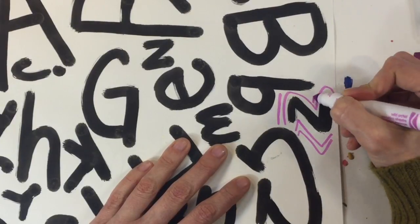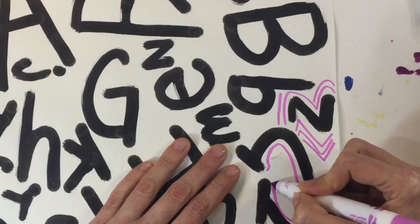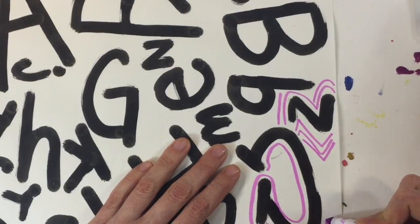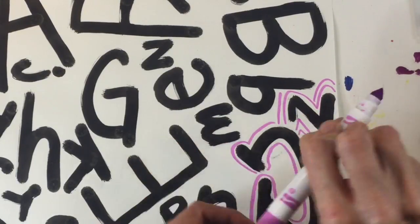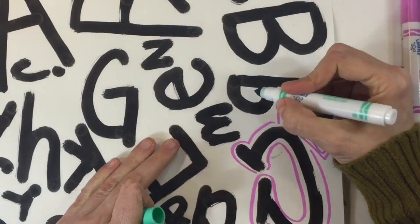Once your painting is dry, we are going to hug the letters with our markers. So I'm going to use different colors of markers and hug my letters. Here's how I do it.